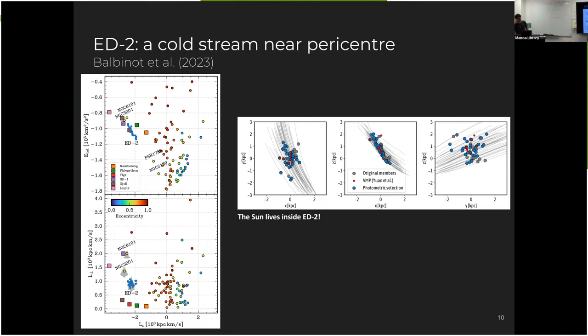And it crosses the origin actually. And what is at the origin is the sun. So we have this cold stream coming from a disrupted globular cluster that is passing through the position of the sun right now.